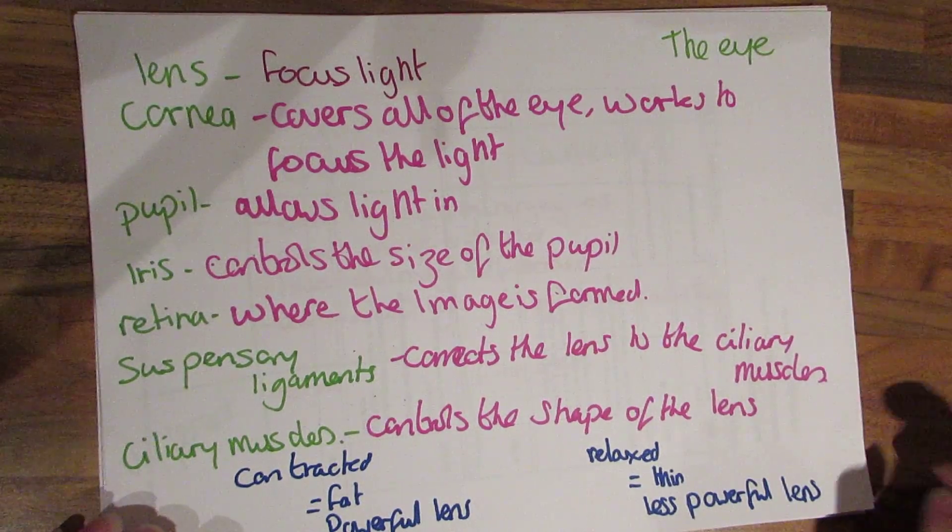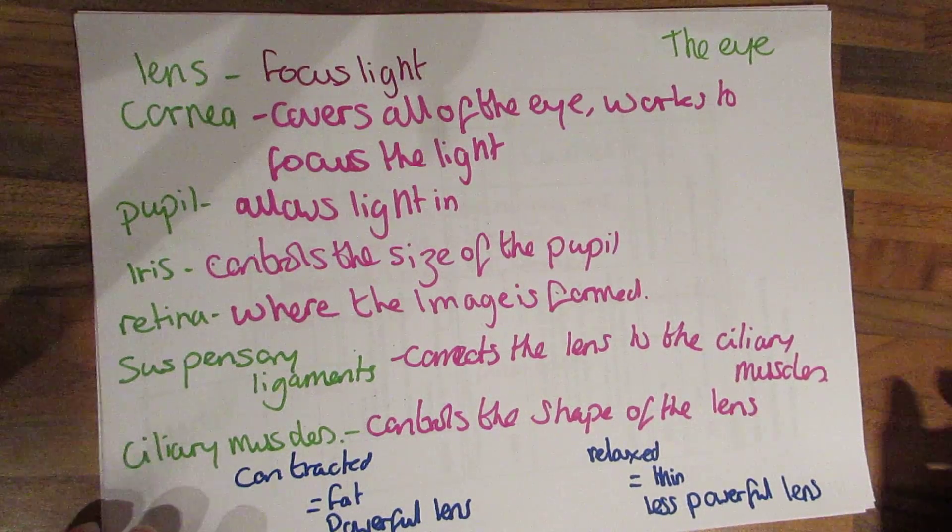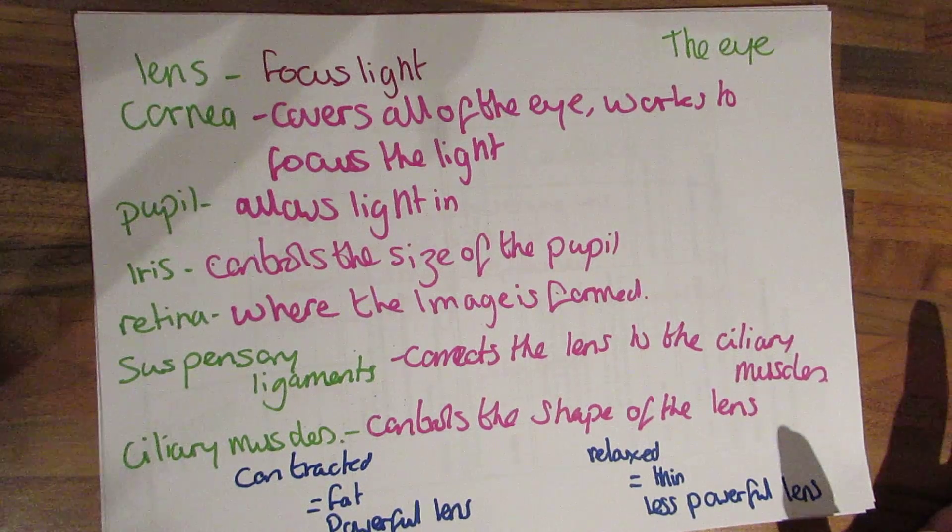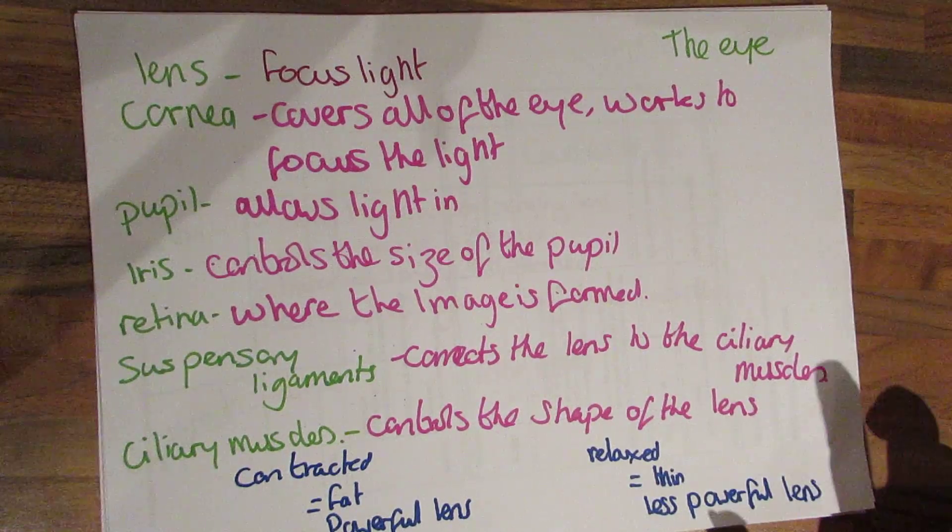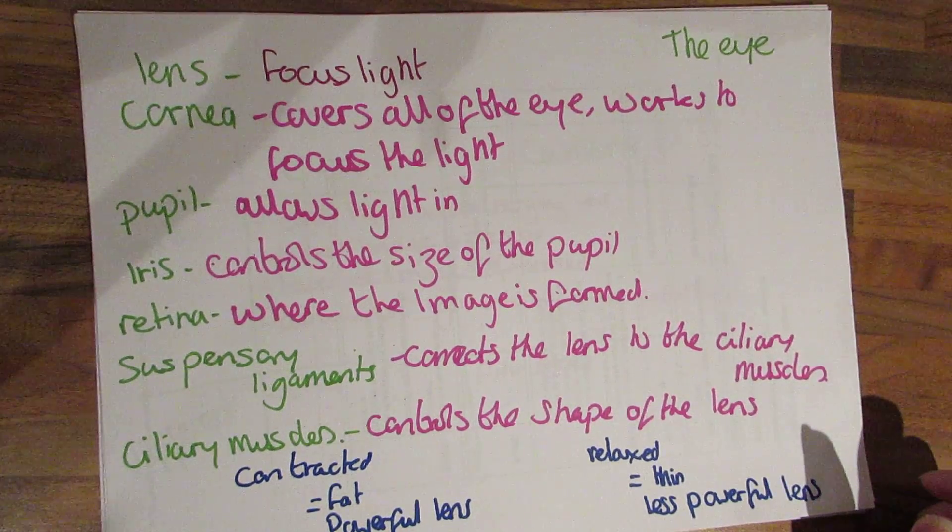So this is what they do. The lens and the cornea work together to focus the light. The lens changes shape. The cornea does quite a lot of work focusing the light. The pupil, this is the bit that lets the light into the eye. The amount of light that actually gets in is controlled by the iris.